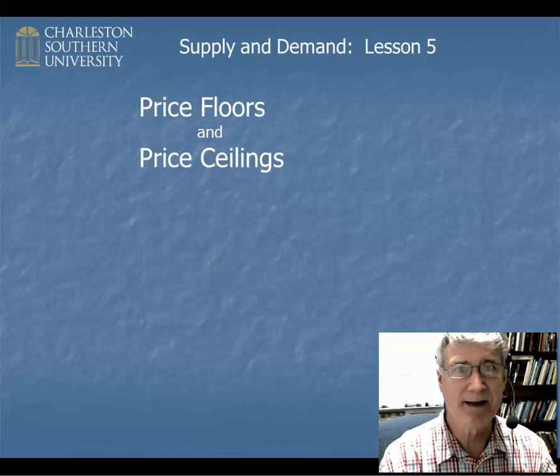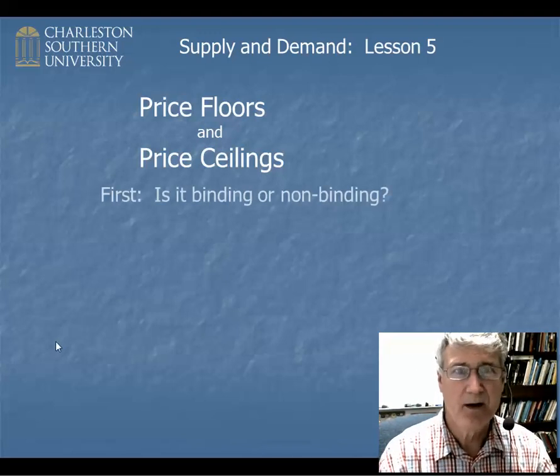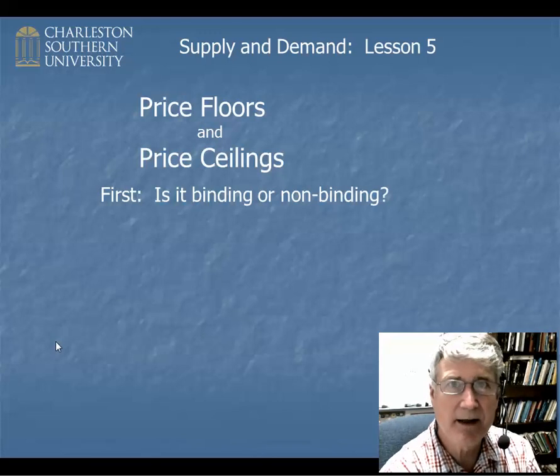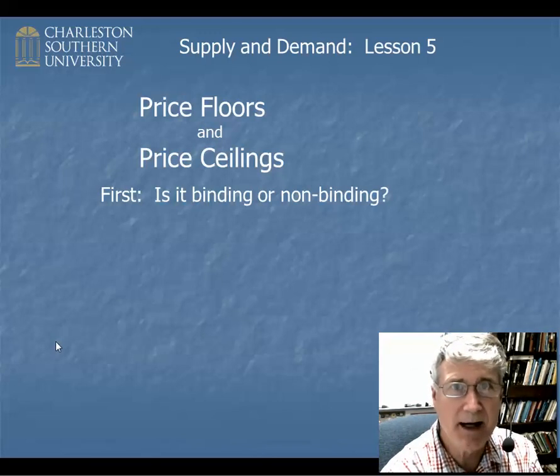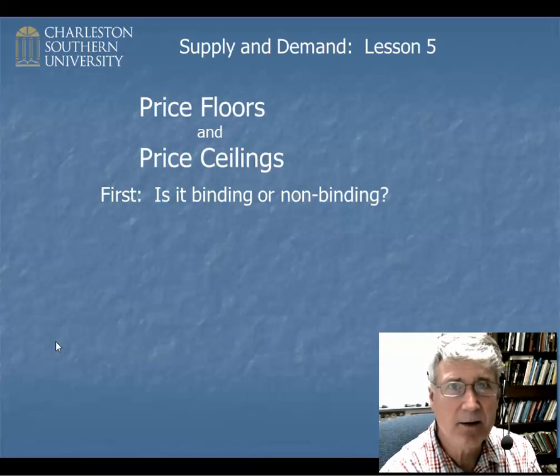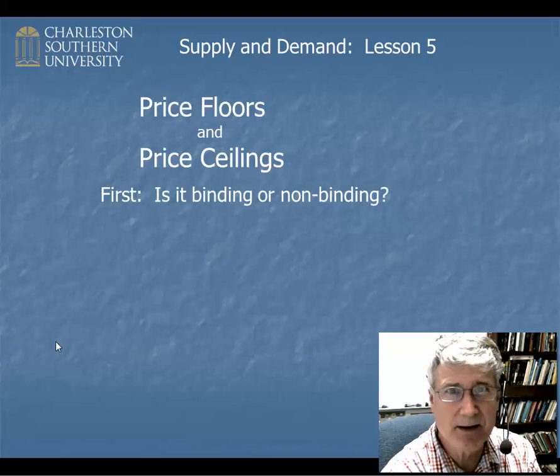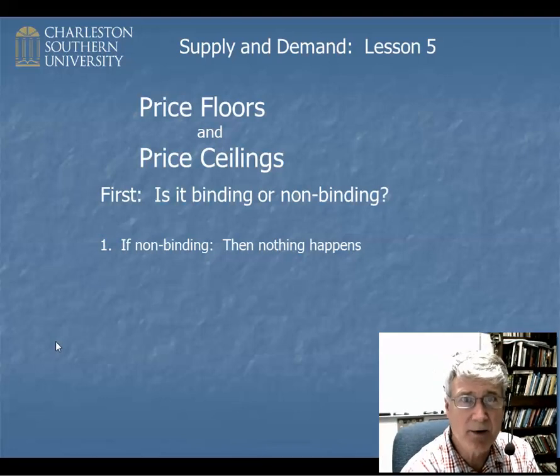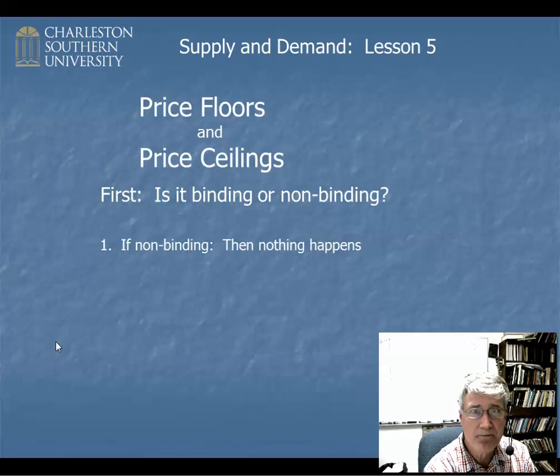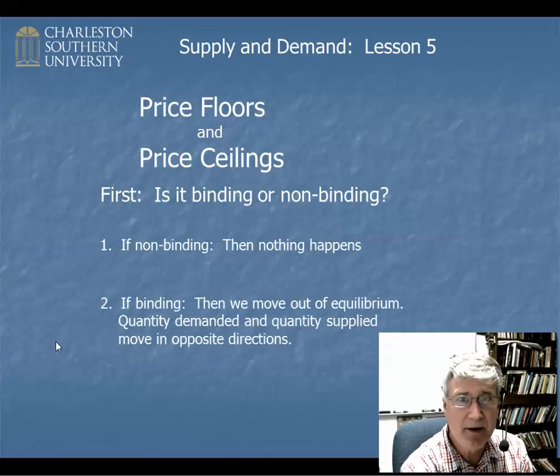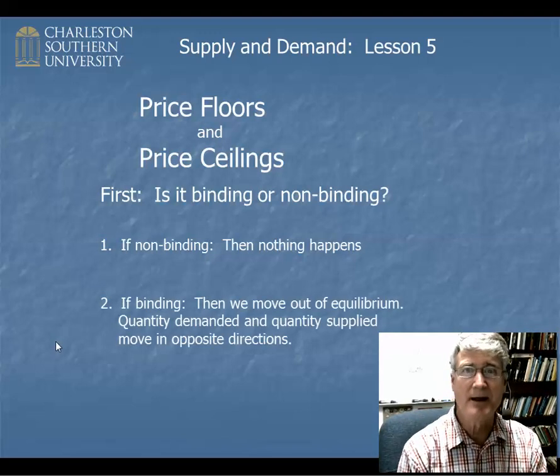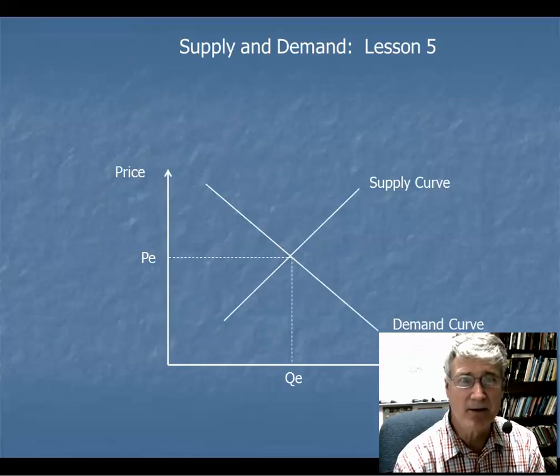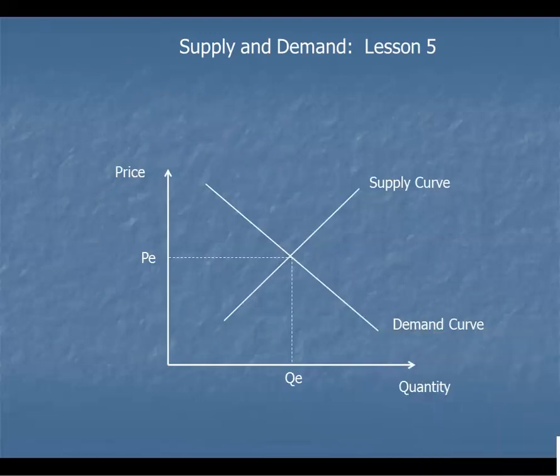Price floors and price ceilings. Alright, so the first thing you need to figure out is, is the price floor or price ceiling going to be binding or non-binding? Sometimes students have a little trouble with this word, but basically binding means that it matters, that it actually does something in the market, and non-binding means that it doesn't matter. So if it's non-binding, nothing happens. Equilibrium occurs just as it did in lesson 4. But if it's binding, then we move out of equilibrium and the quantity demanded and the quantity supplied move in opposite directions.